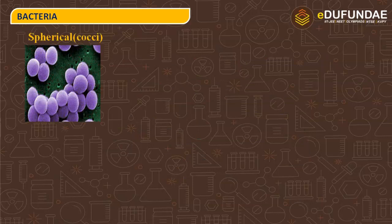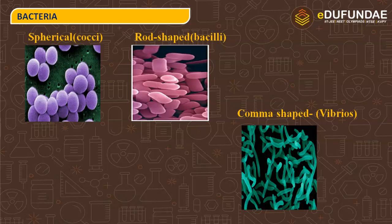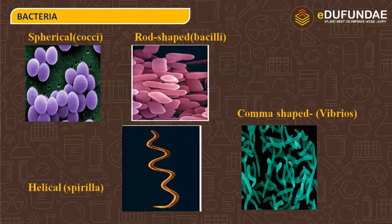Spherical bacteria are called cocci — for example, Staphylococcus is spherical. Rod-shaped bacteria are called bacilli — for example, Streptobacillus. Comma-shaped bacteria are called vibrios — for example, Vibrio cholerae. Helical or spiral-shaped bacteria are called spirilla — for example, spirochetes, where the prefix spiro indicates their spiral shape.